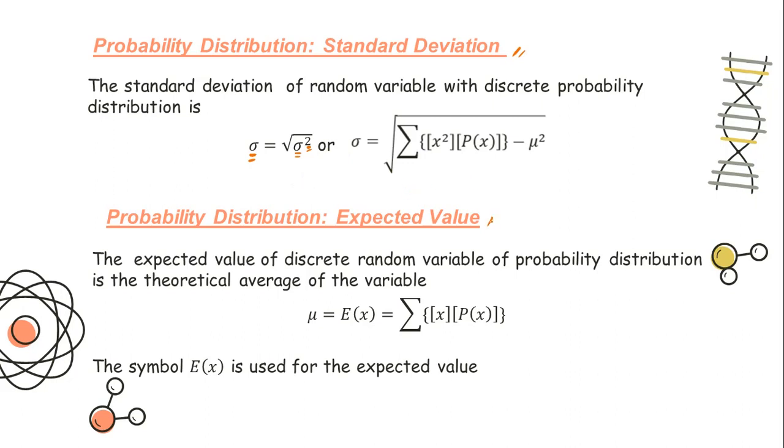The expected value of a discrete random variable is the theoretical average of the variable. As you can see, it is the same formula as our mean. The symbol E(x) is used for the expected value, where X is a random variable. It could be tossing of coins, cards, marbles, jars, etc.